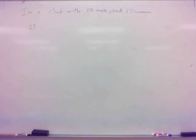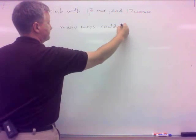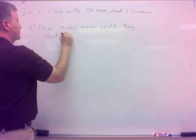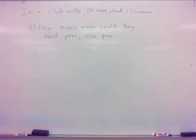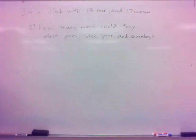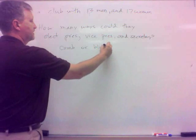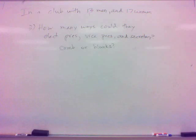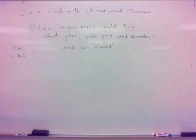Alright. Let's do a couple more. Number three on this. Same club. How many ways could they elect a president, vice president, and secretary? How many ways could they elect a president, vice president, and secretary? Is this a combination or is this blanks? Again, I told you you need to ask that always. Because sometimes it won't be a combination. Sometimes it will be blanks. And it all boils down to, does order matter?